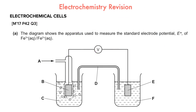Hey guys, I'm making a video on revision with electrochemistry using past paper questions from the recent exams. I tried making much longer videos but couldn't get the time. I'm going to do a quick revision through past paper questions selected from 2016, 2017, and 2018, covering electrochemical cells, predicting chemical reactions, and electrolytic cell calculations for electrolysis like time and current.